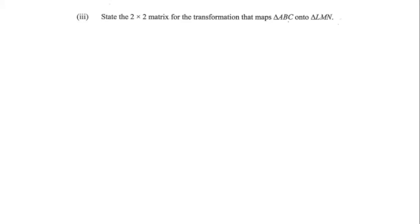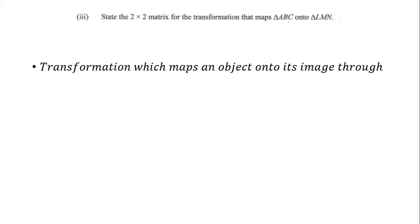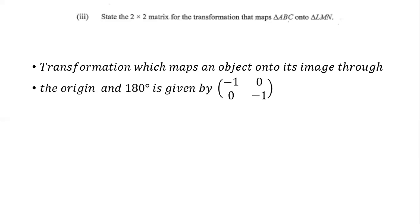Part 3 asks for the 2×2 matrix for the transformation that maps triangle ABC onto triangle LMN. For a 180-degree rotation about the origin, the 2×2 matrix is: [−1, 0; 0, −1], where the diagonal values of −1 correspond to the x and y components respectively.